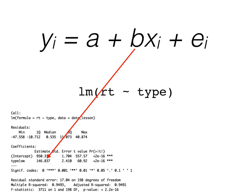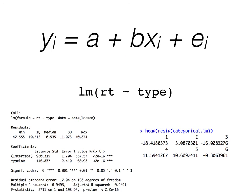As before, we call resid to look at our residuals. And again, here's the first six, and we see that for our first data point, the residual is roughly negative 18 milliseconds.